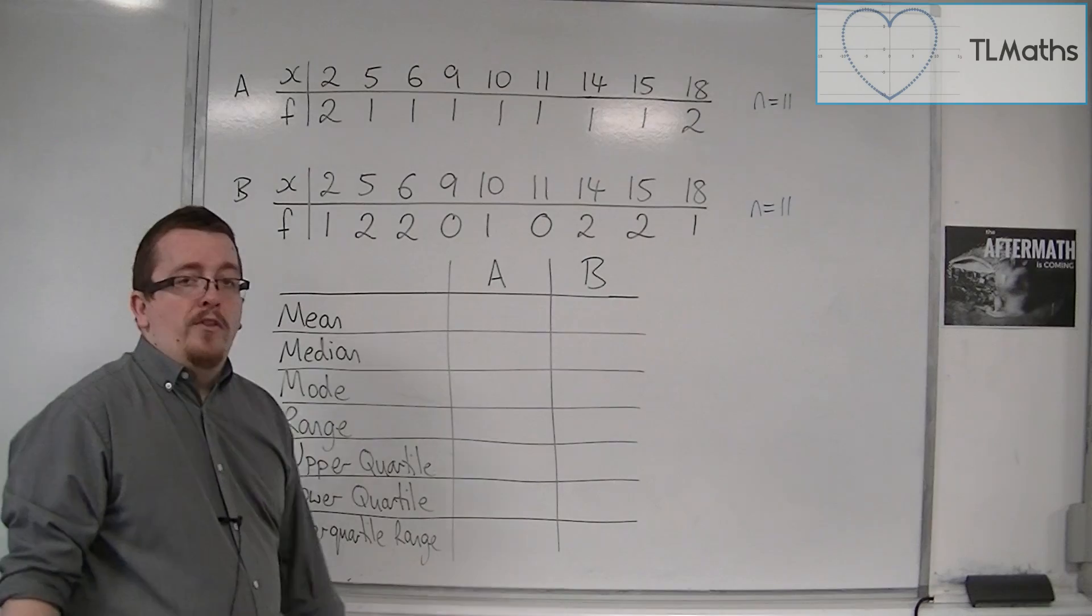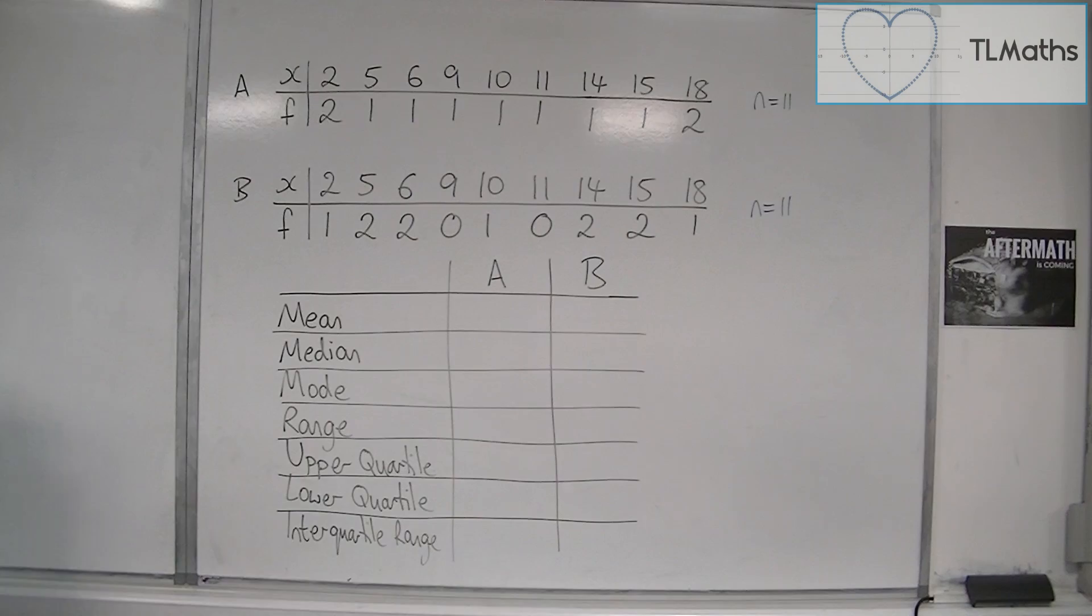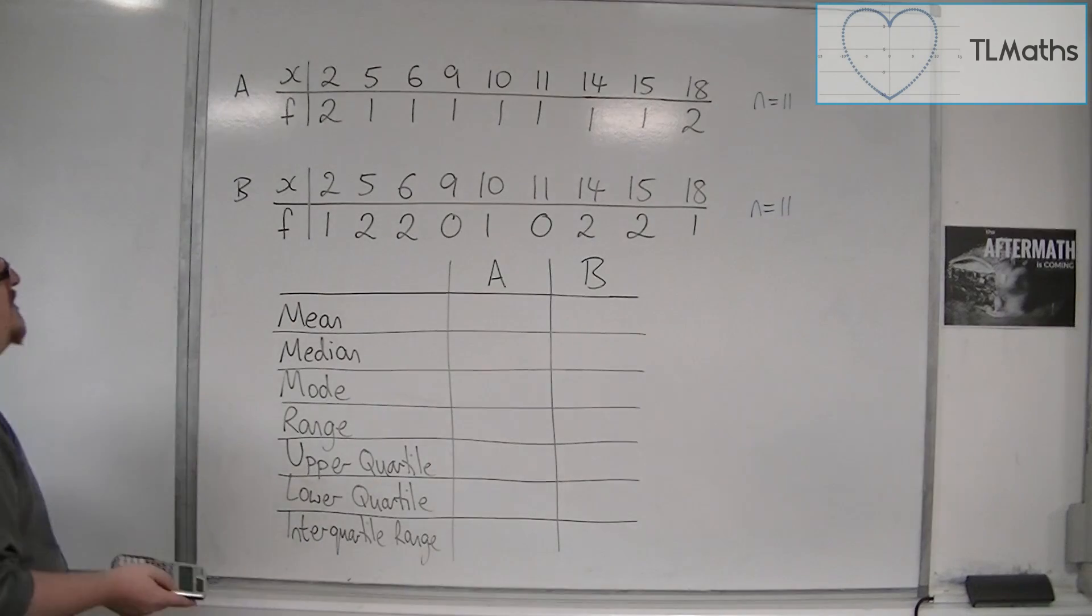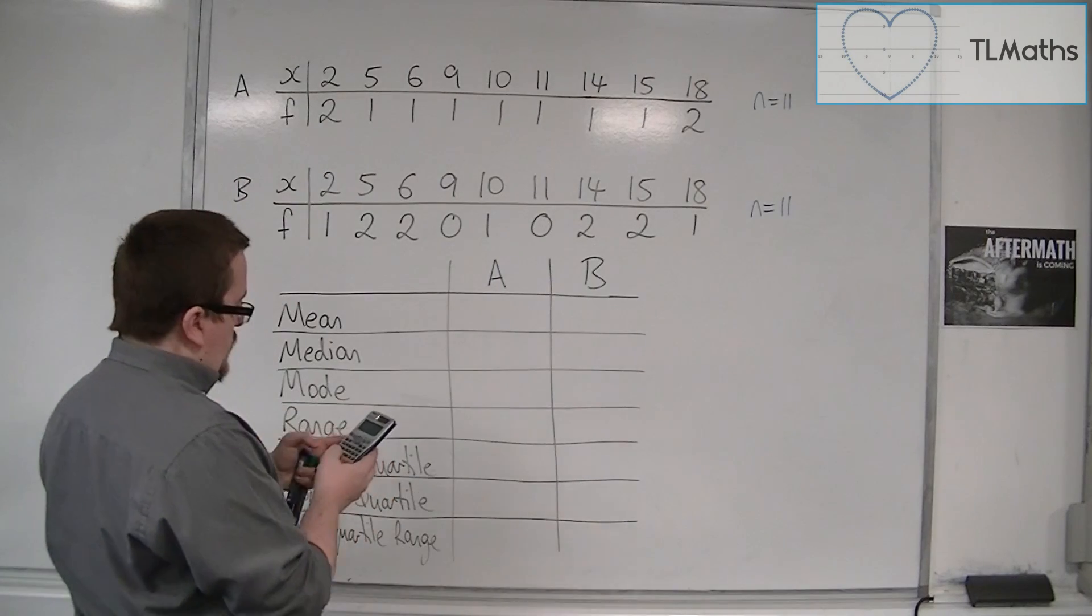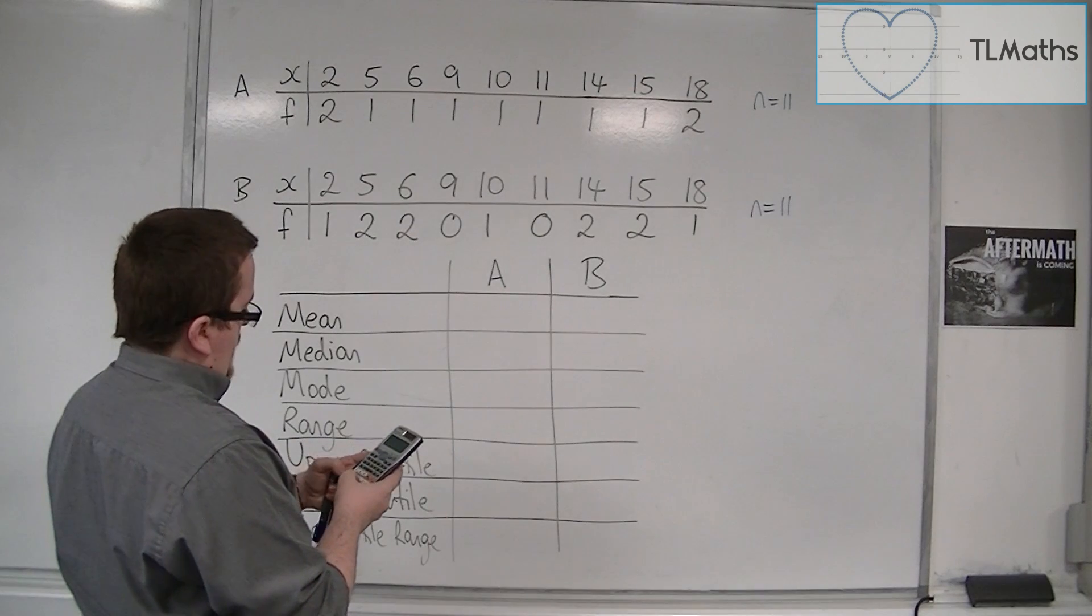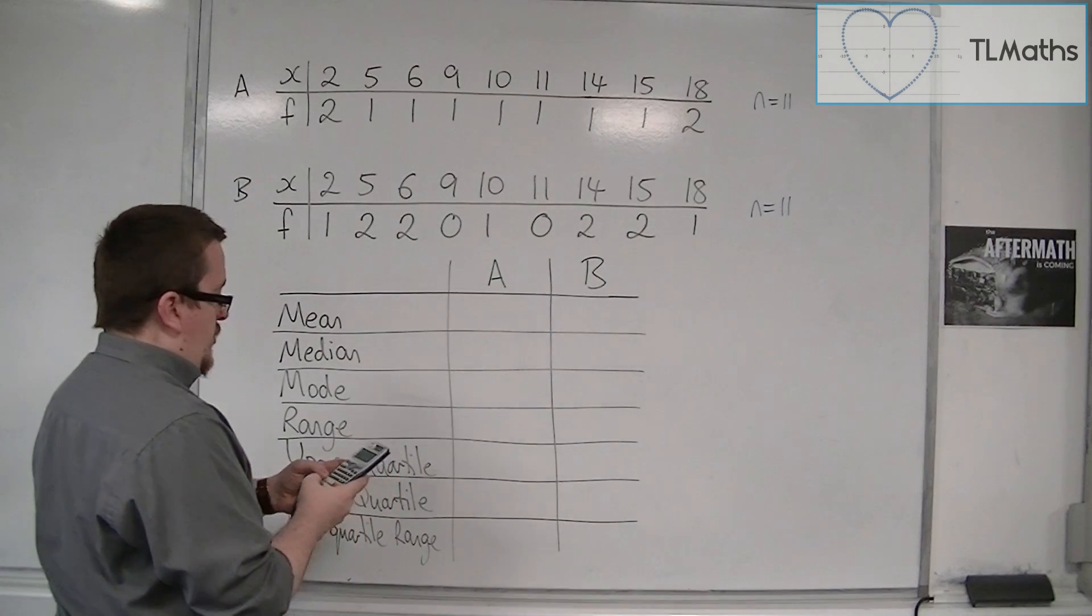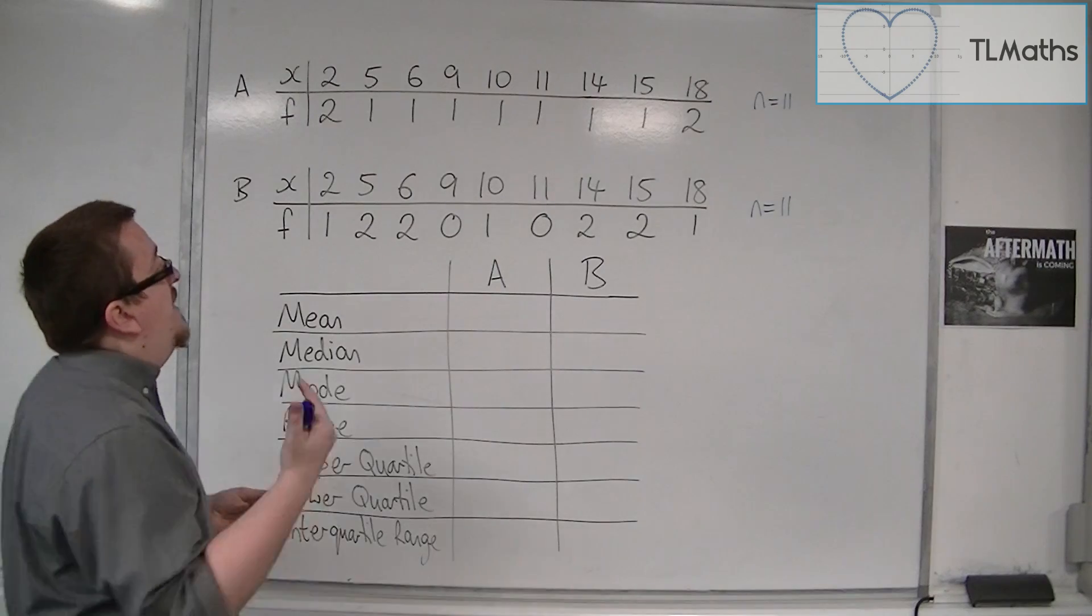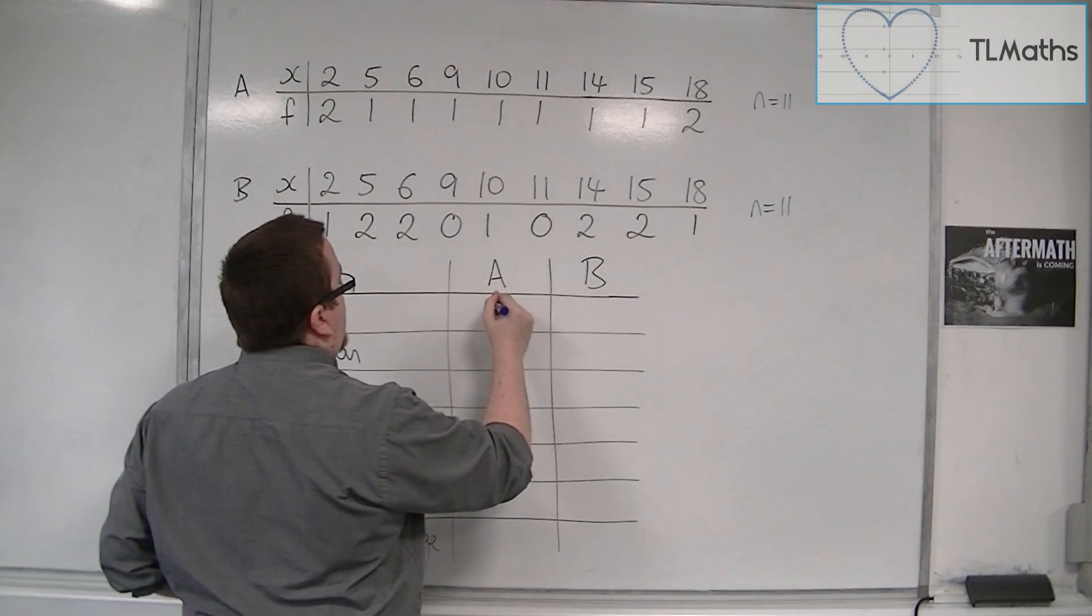And from this data, we want to be able to calculate all of these. So it makes sense to start off with calculating the mean. So we just add them all up and divide by how many there are. So we have two twos, plus a 5 and a 6 and a 9 and a 10 and 11 and 14 and 15 and 2 lots of the 18, and that gets us 110. And then we divide that by how many there are, so 11. So 110 divided by 11 gives me 10.